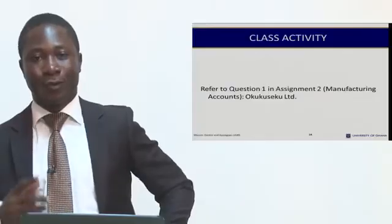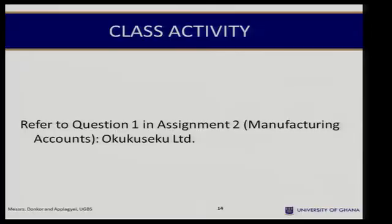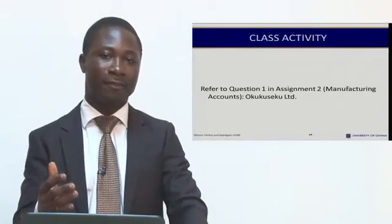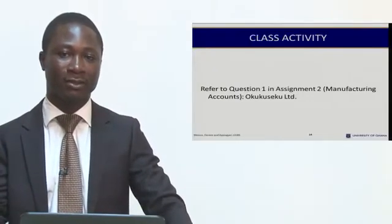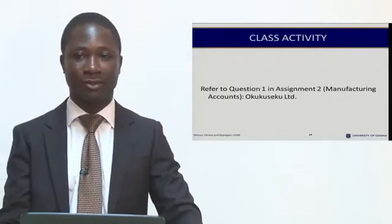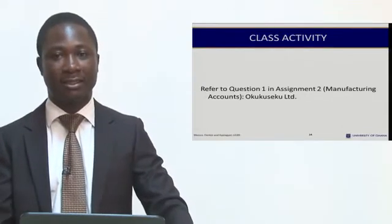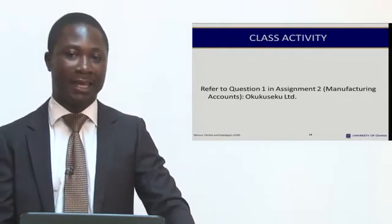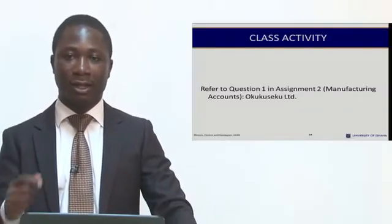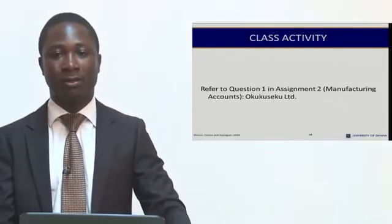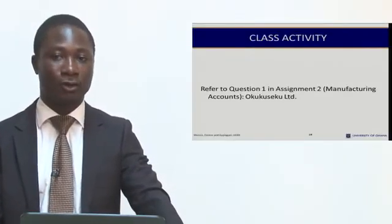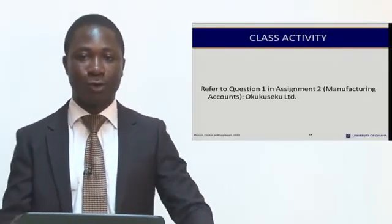At this stage, I would like you to refer to question 1 and assignment 2 for manufacturing accounts — the OkuSeko Limited exercise. Take your time, go through it, and try to separate the direct costs from the indirect costs. Determine your prime cost, determine your factory overheads, and sum them up. If there is any adjustment for work in progress at the opening, add it, then subtract the closing work in progress to determine your cost of production. I do hope you would find this exercise very useful.